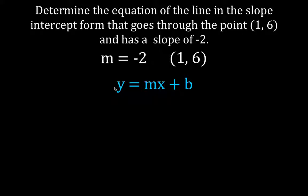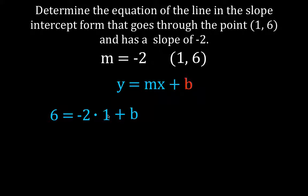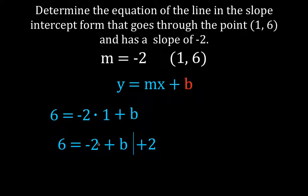We're going to use this equation and calculate b. y is 6, m is minus 2, and x is 1. So we have 6 equals minus 2 times 1 plus b. We simplify: minus 2 times 1 is minus 2, so 6 equals minus 2 plus b. To move the minus 2 to the other side, we add the opposite, which is plus 2. So 6 plus 2 is 8, and minus 2 plus 2 is 0, leaving b equals 8.